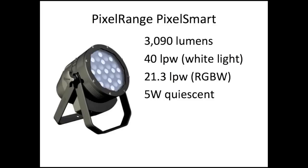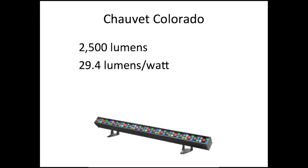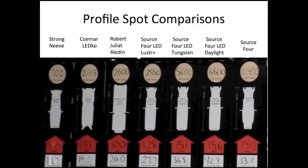The Pixel Range Pixel Smart outputs about 3,000 lumens — 40 lumens per watt in white light, about 21 lumens per watt with RGBW LEDs on — and about 5 watts quiescent power. The Chauvet Colorado outputs about 2,500 lumens, almost 30 lumens per watt. Now let's look at some other data. This is a picture I took at PLASA in London last September: ETC was quietly showing their Source 4 LED fixture in a private demo room, doing a side-by-side comparison with a light measuring instrument, and they verified the output right in front of me.